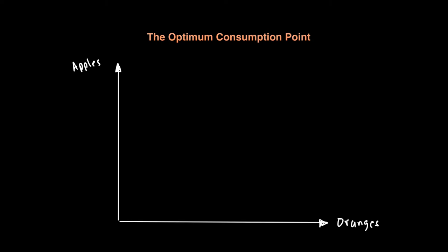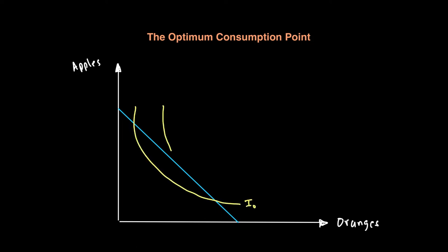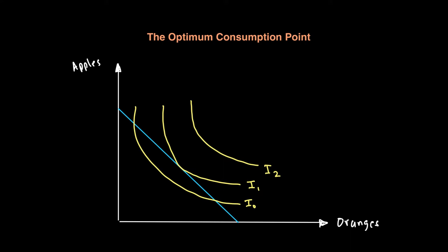Let's say our budget line is this blue line, which tells us our affordability of goods. And let's say we have various indifference curves — I0, I1, and I2. I can keep on drawing indifference curves to the right because indifference curves to the right give more utility. But beyond this budget line things are unaffordable, so let's restrict our analysis to these three indifference curves.